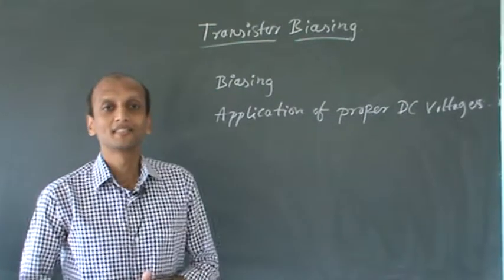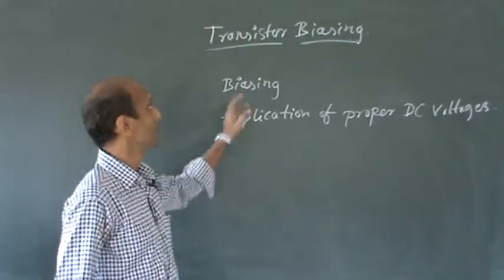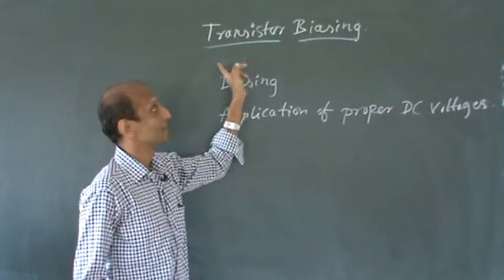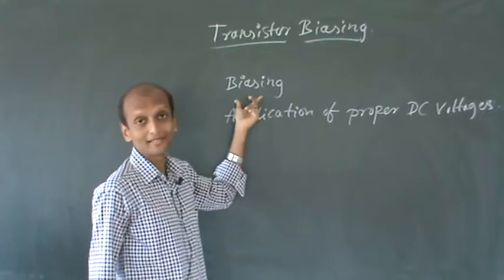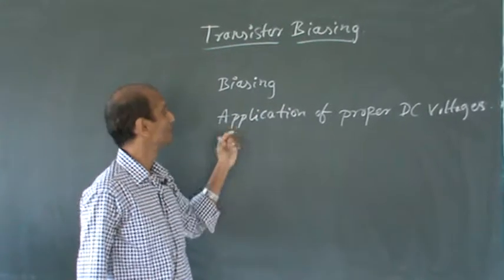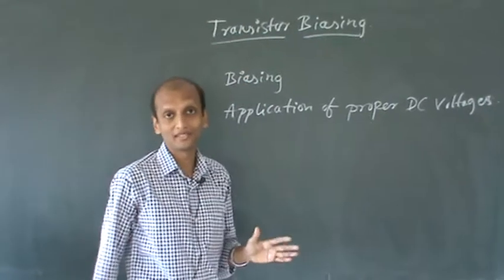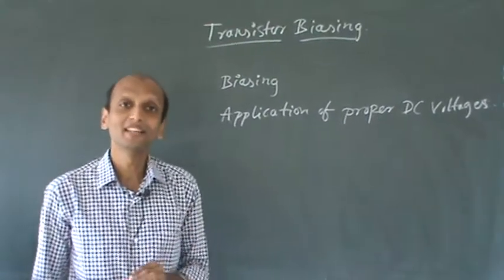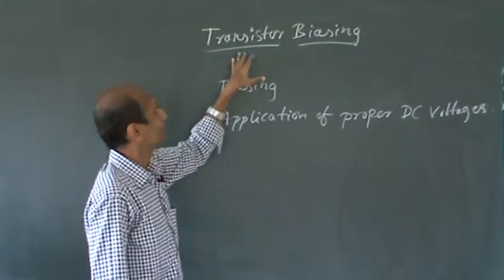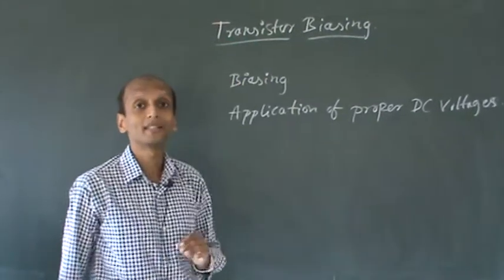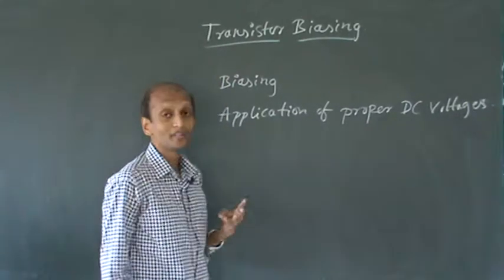In today's class we will start with our second chapter, that is transistor biasing. The question comes: what is biasing? Biasing means the application of proper DC voltages across any device. So now we will see how to bias a transistor.